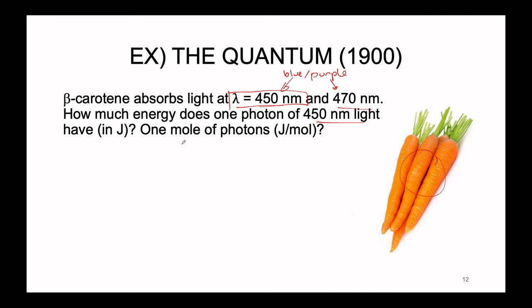Let's pick out one of these wavelengths and focus on the 450 nanometer light. The question is: how much energy does one photon — one particle of light with a wavelength of 450 nanometers — have in joules? In addition, we can ask the follow-up question: instead of just one photon, what if we had one mole of photons? How much energy is present there? I'm going to let you guys try and work through this problem before we go through it together.